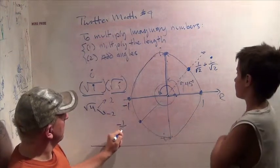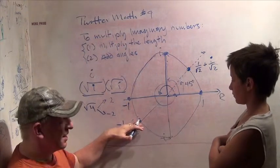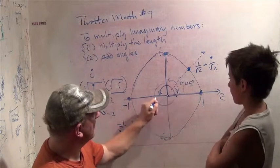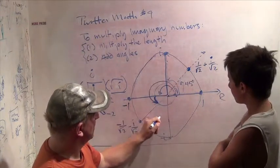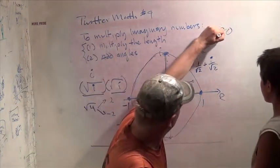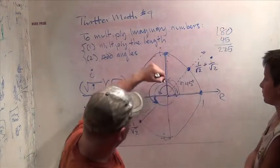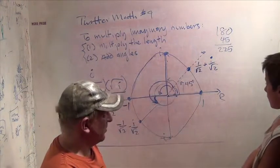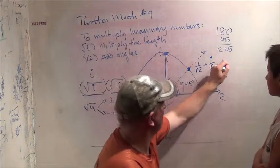Negative 1 over the square root of 2 minus I over the square root of 2. Now let's see if this makes any sense. Let's use our formula. Well, if this is 45 degrees by our geometry, this is 45 degrees, right? So this is 180 plus 45. What's that? 180 plus 45 is 225. That's 225.